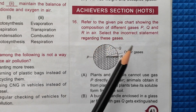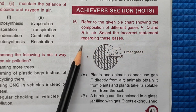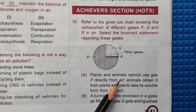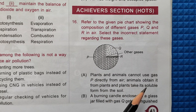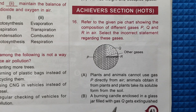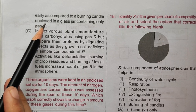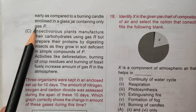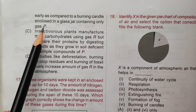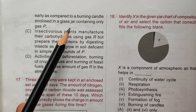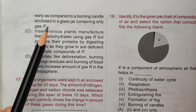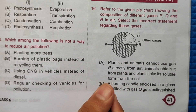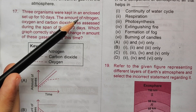Achievers Section. Question 16: Refer to the given pie chart showing composition of gases P, Q, and R. Statement A - plants and animals cannot use gas P directly from air - is correct. Statement B - a burning candle in a jar filled with gas Q gets extinguished earlier than one in a jar with gas P - is incorrect, because gas Q is oxygen which supports burning and gas P is nitrogen which does not. The correct answer is option B.